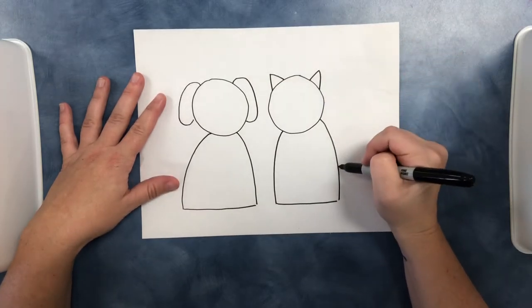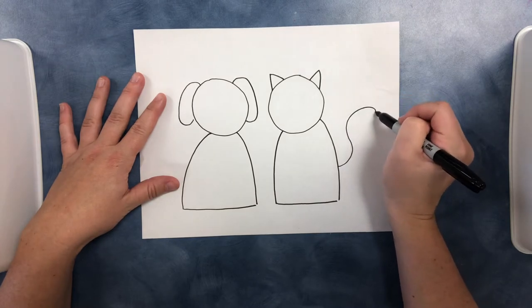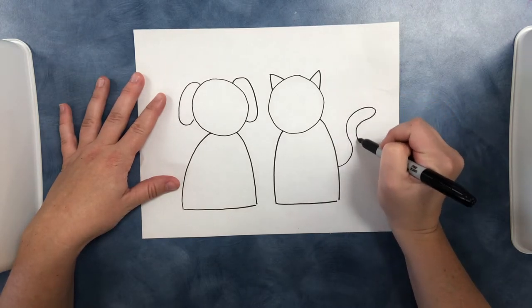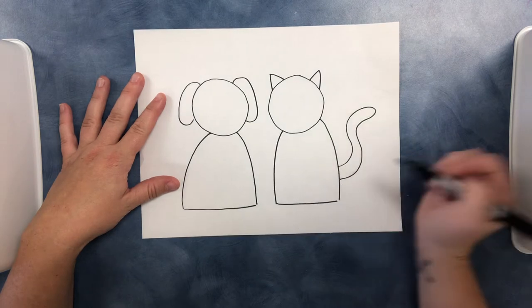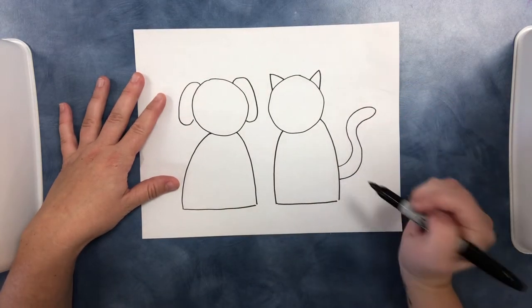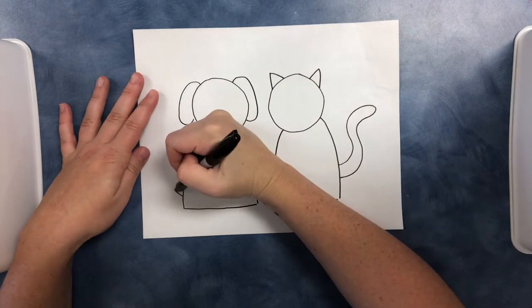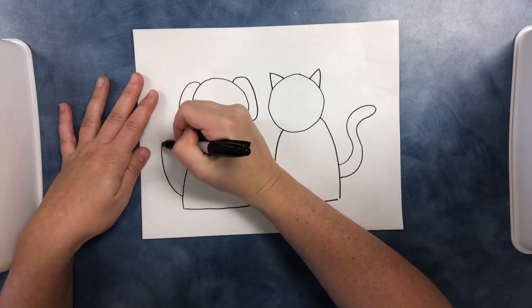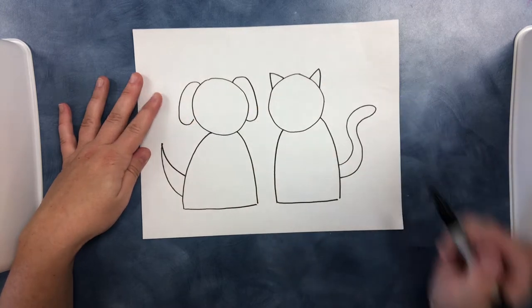Let's give our cat a curly tail so you can make a little wiggle line that kind of looks like an S and connect it down. Then our dog's tail is just going to go straight up with a little bit of a curve and right back down.